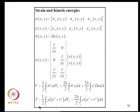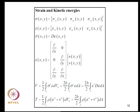The kinetic energy is half the integral over the volume of rho times (U-dot squared plus V-dot squared). Over an area integral this becomes a corresponding expression. We now know the relationships between all these quantities and can develop finite element models for these continuum elements.